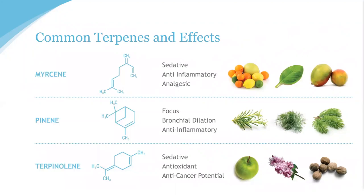Pinene accounts for much of the familiar scent of the cannabis plant itself. It's often associated with a piney, turpentine-like smell, and can also be found in rosemary and parsley. It's among the most commonly naturally occurring terpenoids and has been found to offer a number of health benefits, including acting as an anti-inflammatory, as a bronchodilator, as well as reducing short-term memory loss and promoting alertness and focus. The presence of pinene can depend on factors like grow medium, flowering time, and the curing process.